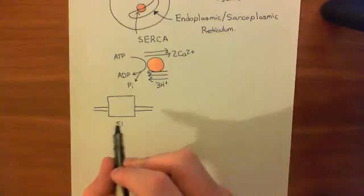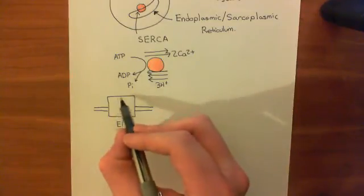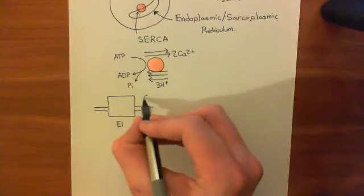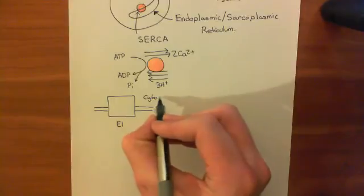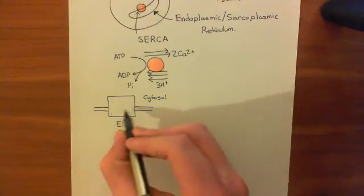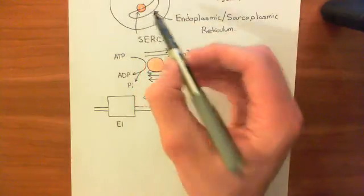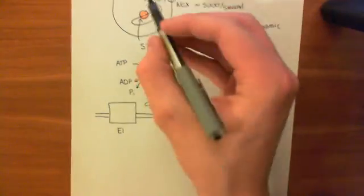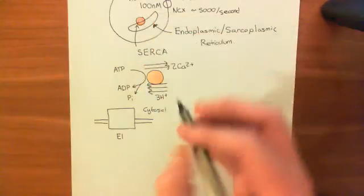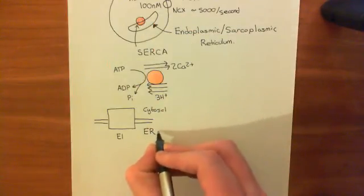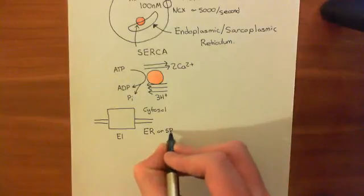Remember, this is the phospholipid bilayer that makes up the endoplasmic reticulum membrane here. On this side is the cytoplasm, and on this side is the endoplasmic reticulum or sarcoplasmic reticulum lumen.